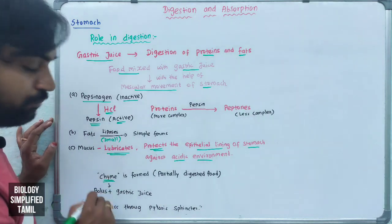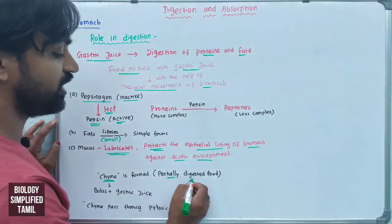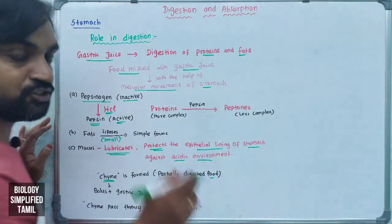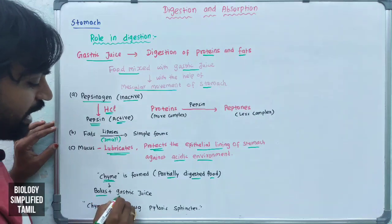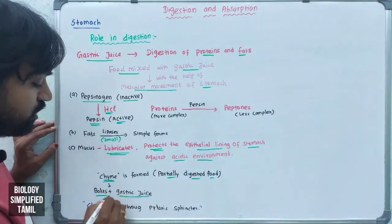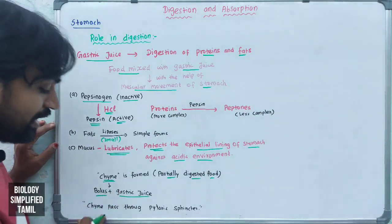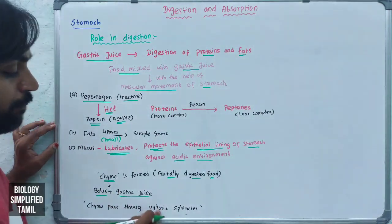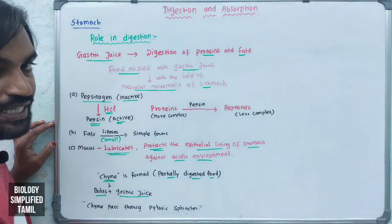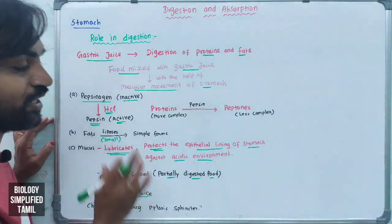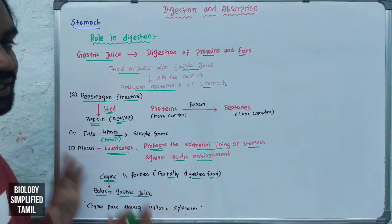Chyme is formed in the stomach. What is chyme? It is partially digested food in the stomach — chyme is a mixture of bolus and gastric juice. This chyme then passes through the pyloric sphincter to the small intestine.